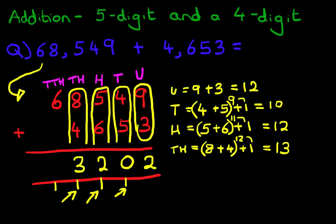And finally, we've got the 10,000. We've got 6 plus 0, but don't forget we've got the 1 here. So 6 plus 1 is 7. And we have our answer. 73,202.